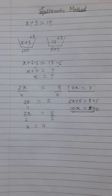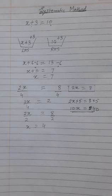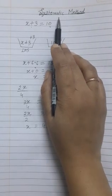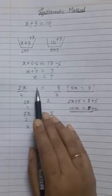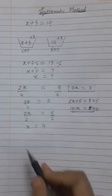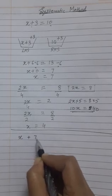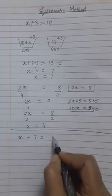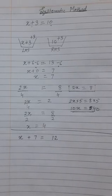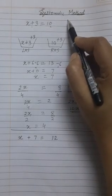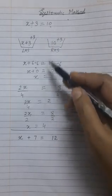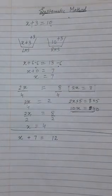Whatever operation we perform on the left hand side, the same operation we need to apply on the right hand side also — then the equation remains balanced. Now, the systematic method is solving an equation by applying this concept of balancing. Suppose the equation given to us is x plus 7 equals 12. I need to find the solution of this equation using the systematic method.